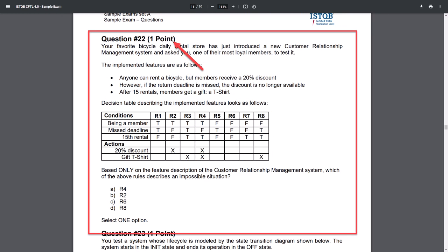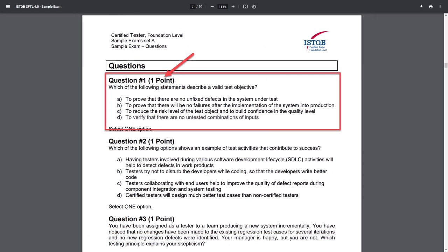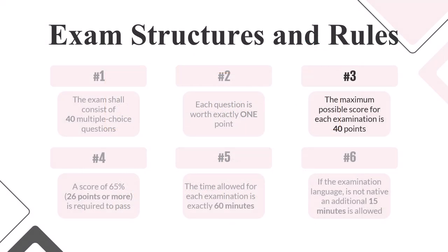Some of the questions are so difficult that they take a lot of time, but fortunately there are only eight such K3 questions on the exam. Other questions are short and simple — finding the right answer takes a minute or less — and they are also worth one point. Since we have 40 questions and each is worth one point, the maximum score is 40 points. In order to successfully pass the exam you need to score 26 points. Answering 26 questions correctly is not as easy as it seems.